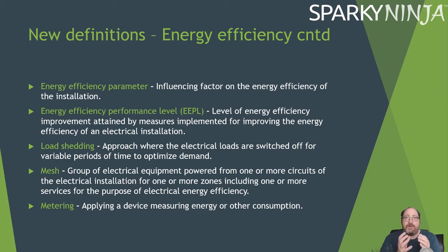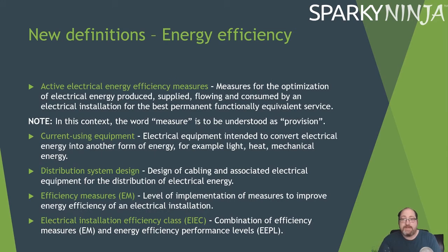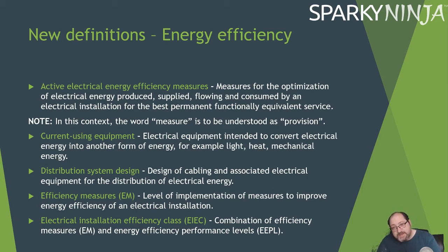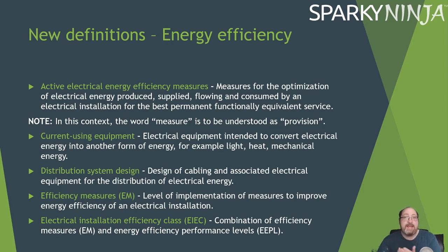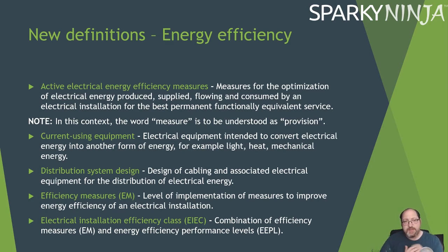When we combine the efficiency measures with the performance level, we get the actual efficiency class — the EIEC — which is a combination of efficiency measures and energy efficiency performance levels. There are targets and scoring systems to reach, and these will be covered in detail in a Part 8 video.